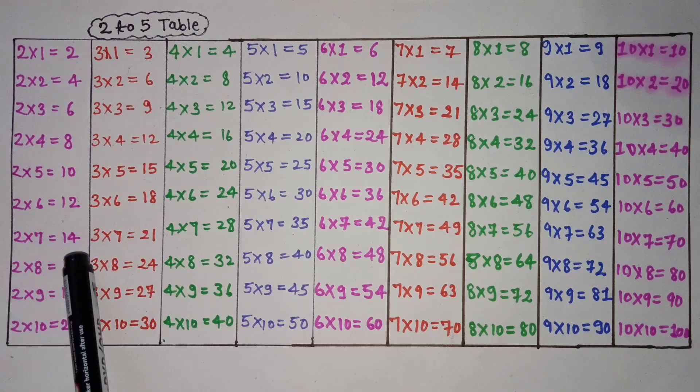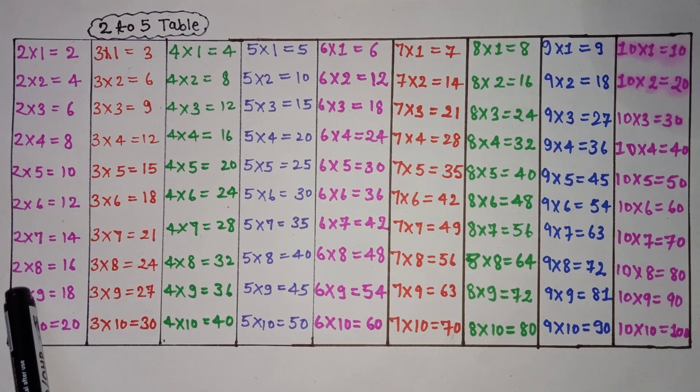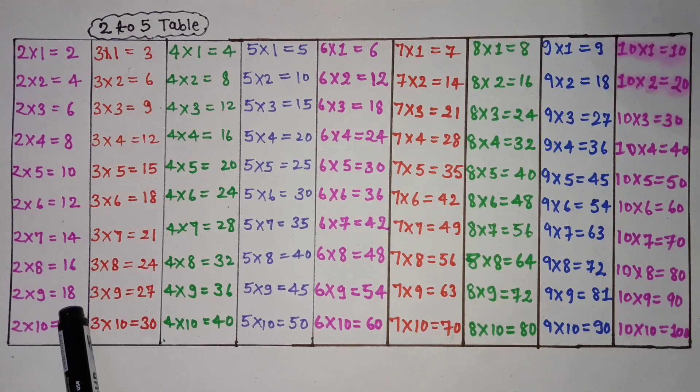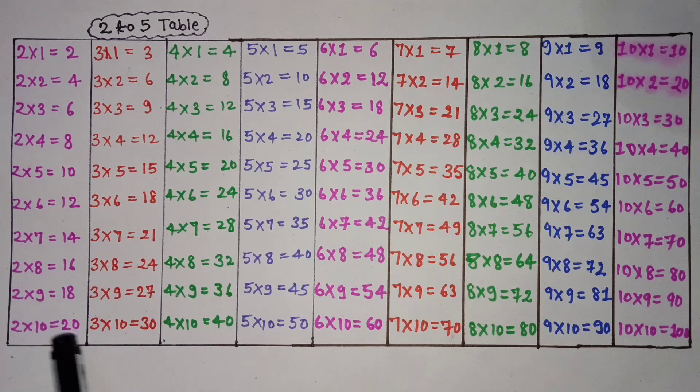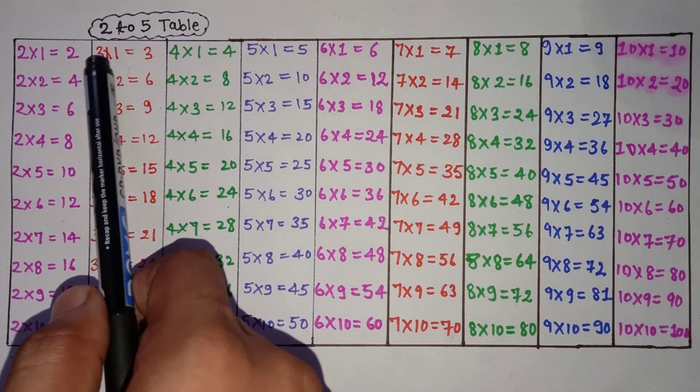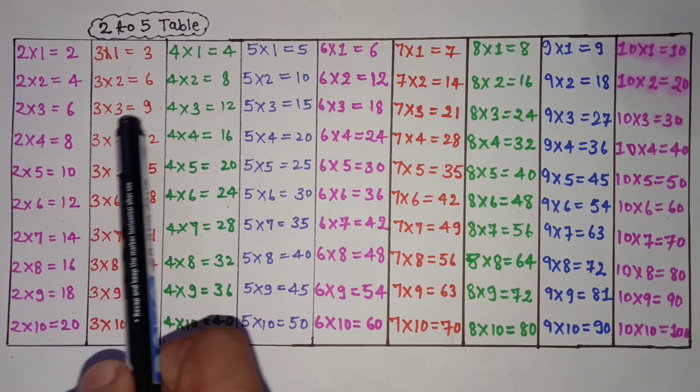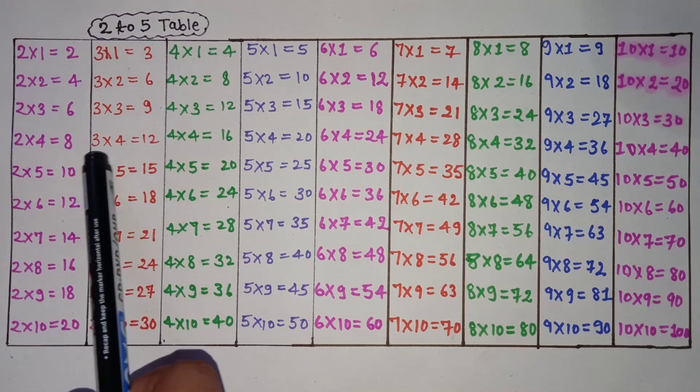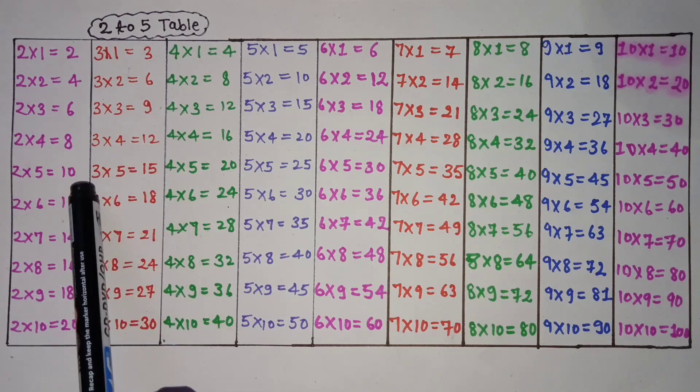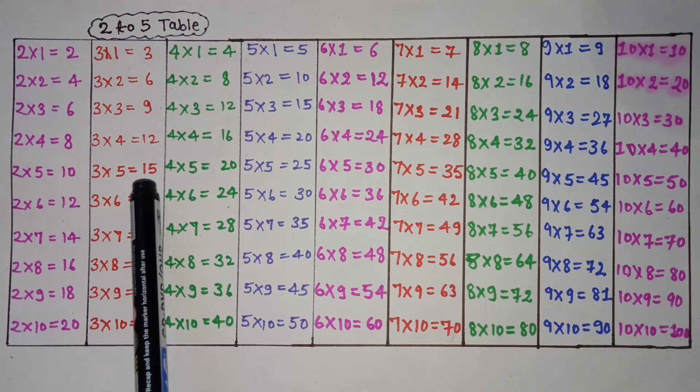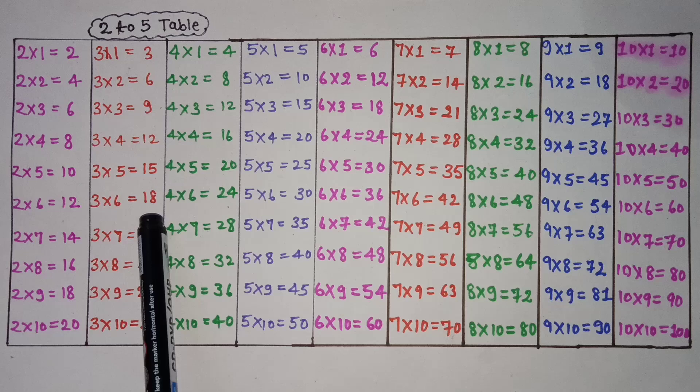2 times 7 is 14, 2 times 8 is 16, 2 times 9 is 18, 2 times 10 is 20. 3 times 1 is 3, 3 times 2 is 6, 3 times 3 is 9, 3 times 4 is 12, 3 times 5 is 15, 3 times 6 is 18.